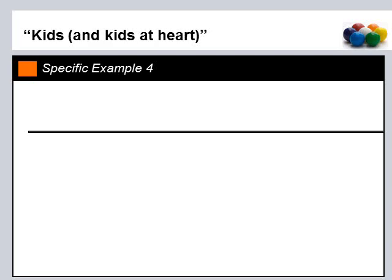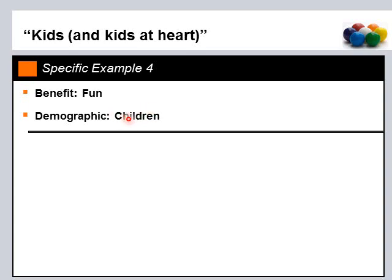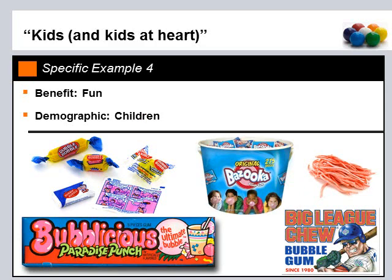The last example, and my favorite — kids and kids at heart. The benefit is fun, and the demographic is children, or those who think they're children. Here are some specific examples: Double Bubble gum, old Bazooka Joes with the comic strips inside, Bubblicious — very well recognized in the children's market segment — newly branded Bazooka Joe bubble gum, and one of my favorites as a child that I still purchase today: Big League Chew bubble gum.